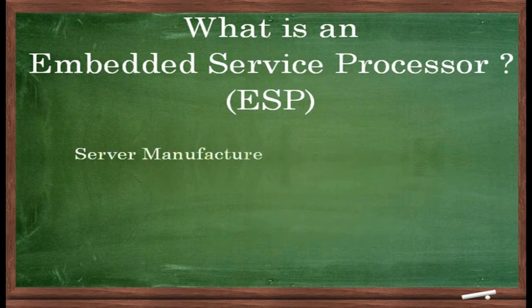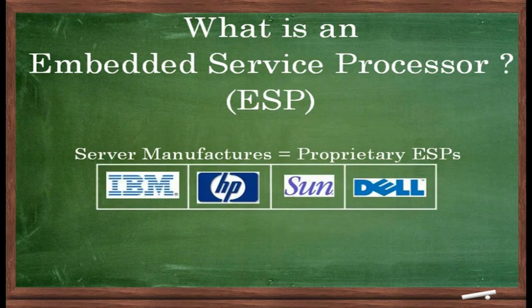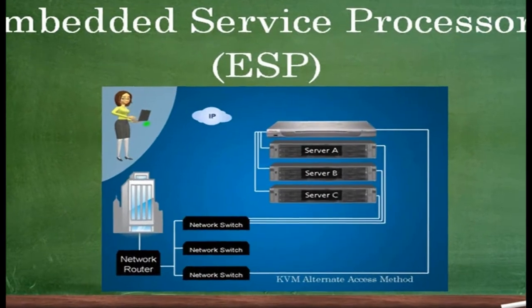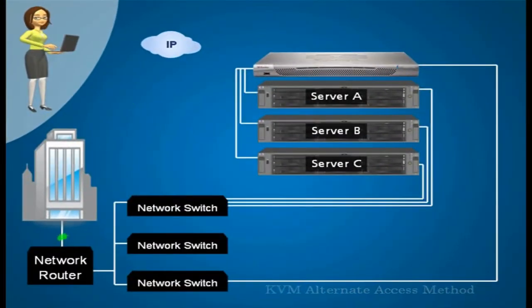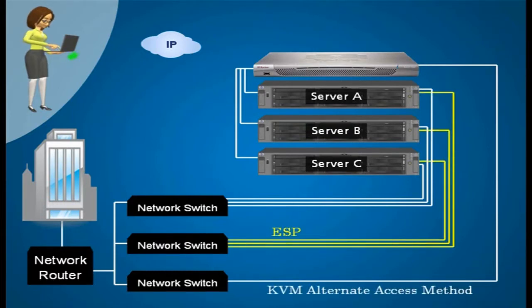Most server manufacturers have their own proprietary ESPs. These include IBM, HP, Sun, and Dell. A primary benefit of using a traditional KVM switch to access a server is that it provides an alternative access method. This is crucial if the primary method becomes unavailable. To mimic this functionality, most ESPs are connected to an IP network that is separate from the primary network.